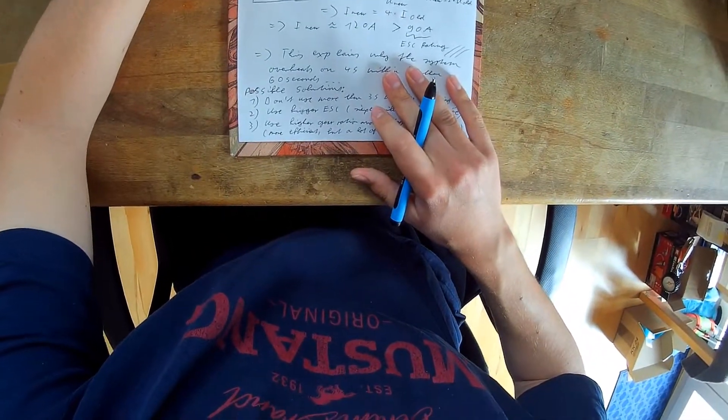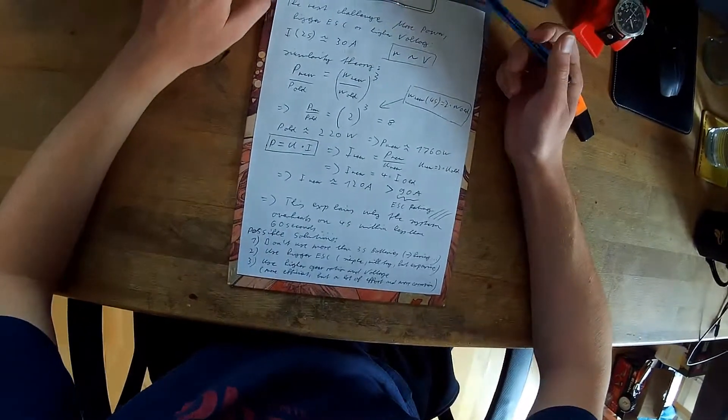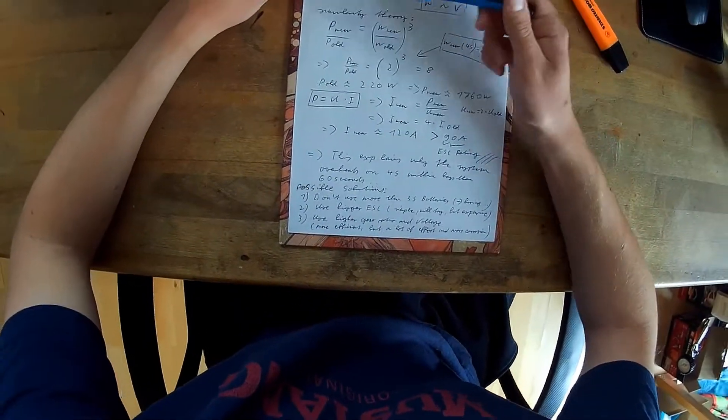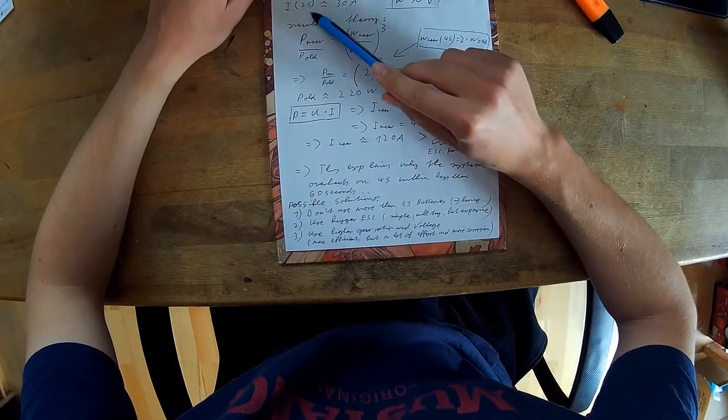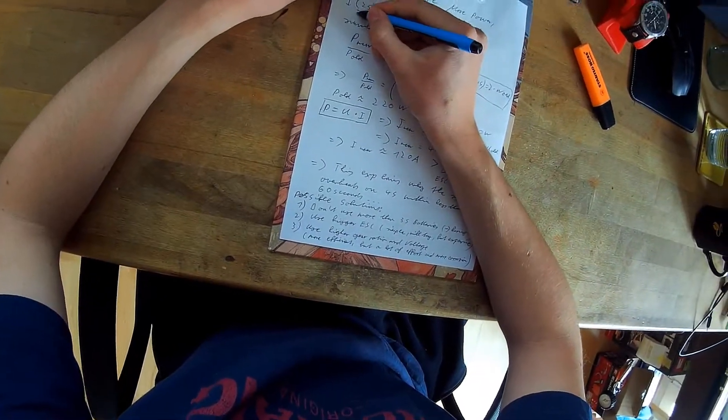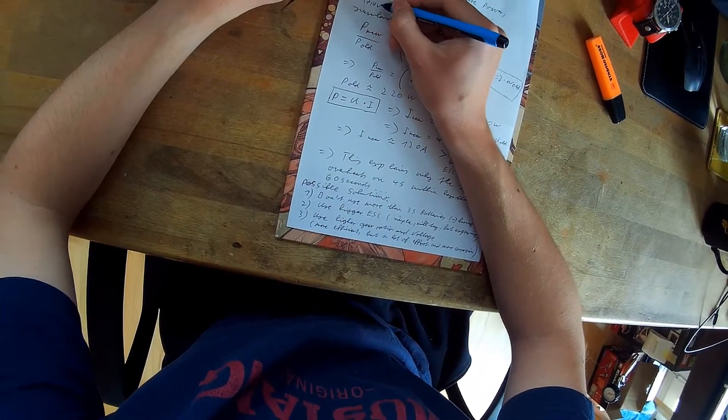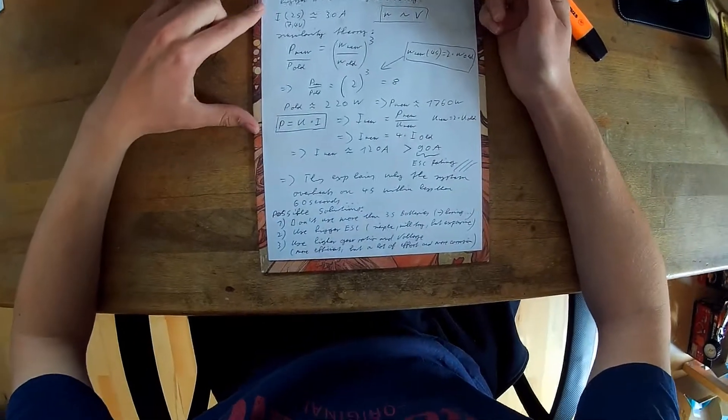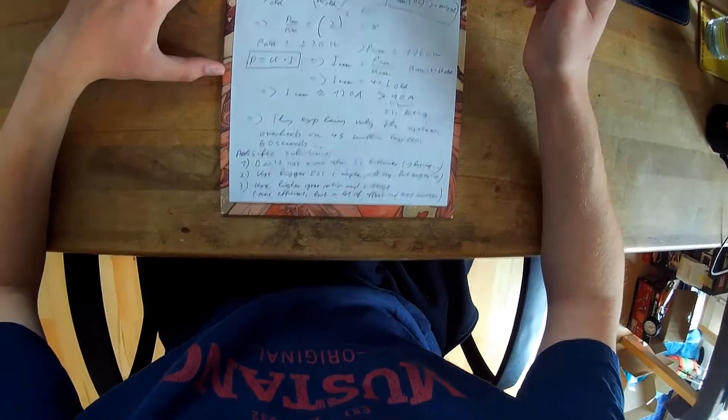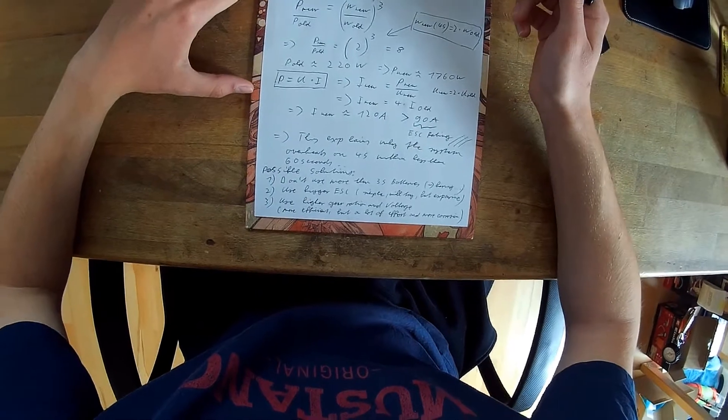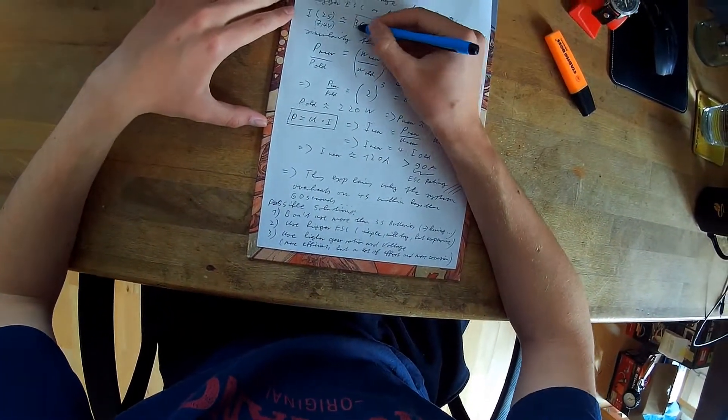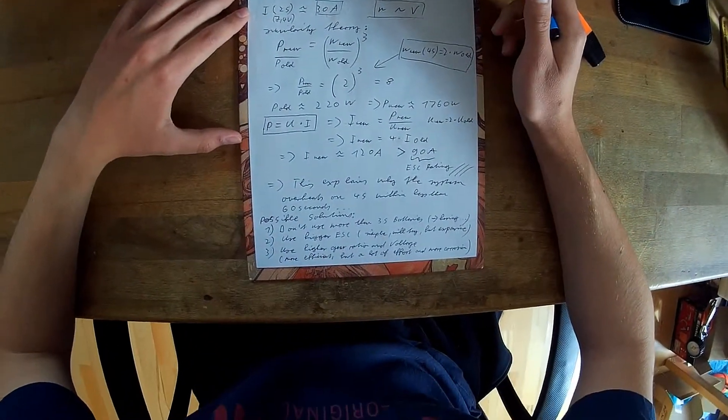So we can actually calculate that. With the battery capacity and the range that I got, I could calculate that with a 2S battery, that's 7.4 volts, we get a power of about 220 watts and a current of 30 amps.